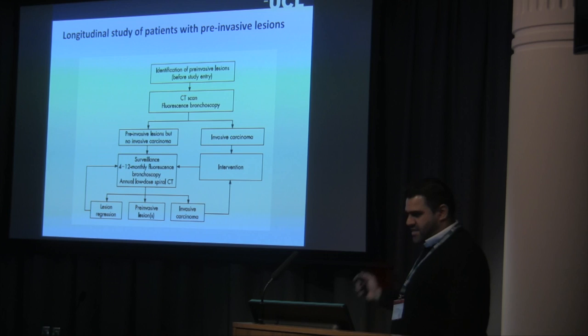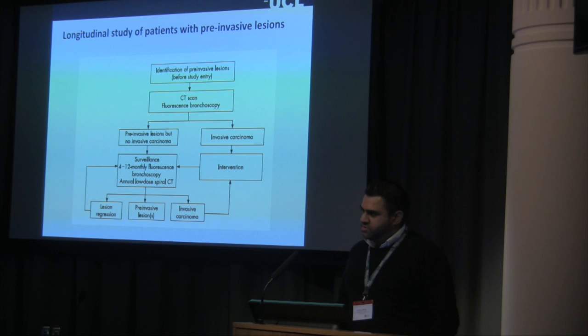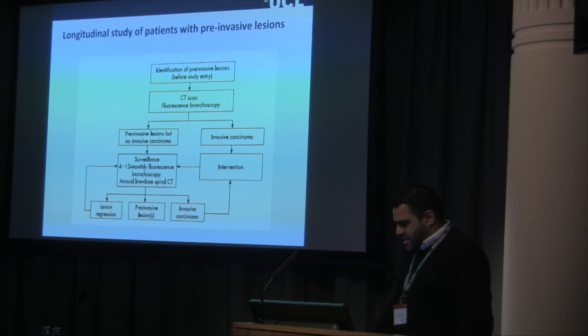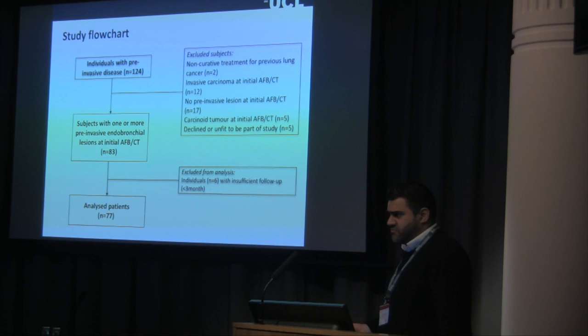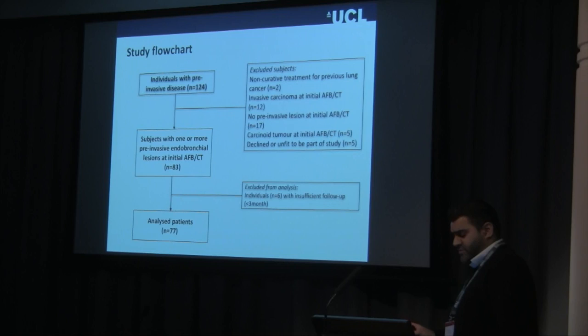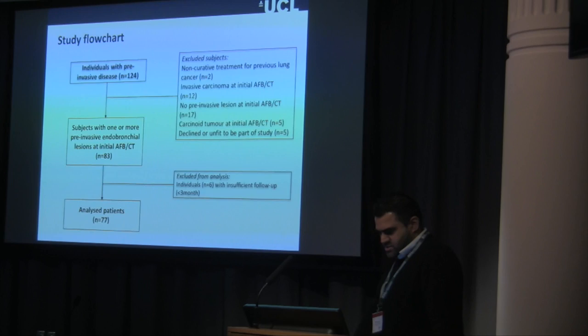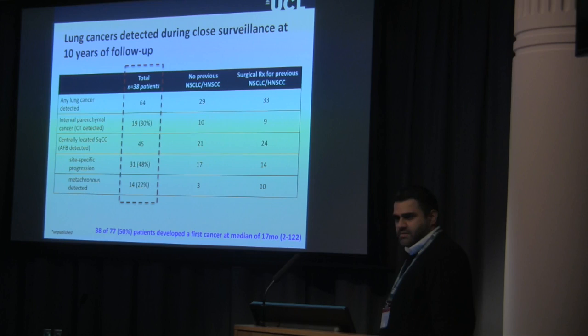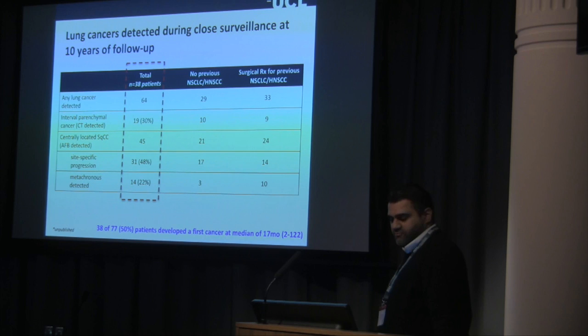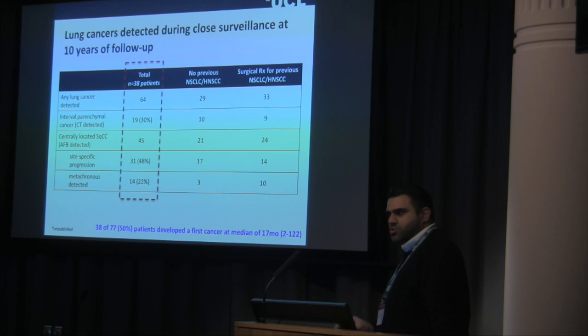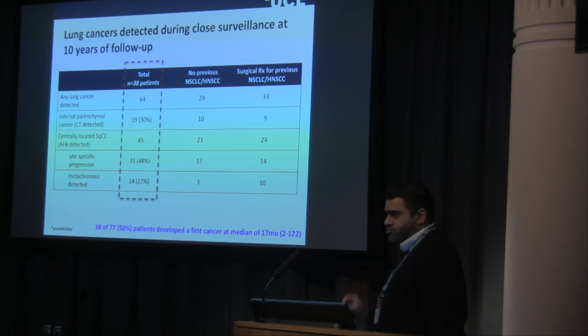Jeremy George, a physician with about 30 years of experience, had the foresight in the 1990s to recognize that these pre-invasive lesions are quite important and started a longitudinal surveillance study. He followed patients closely with autofluorescence bronchoscopy and CT. Of 124 patients with up to 15 years of follow-up, I have analyzed 77 patients. Of those 77, 38 developed cancer, and we detected 64 cancers in total in those 38 patients. Half were at the index site — the original pre-invasive site — and the others developed disease elsewhere.